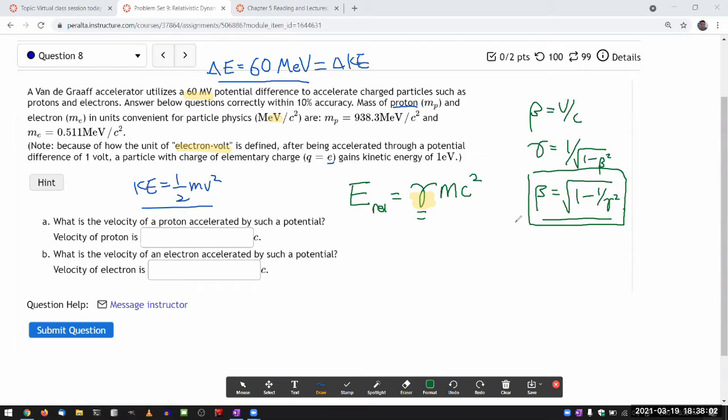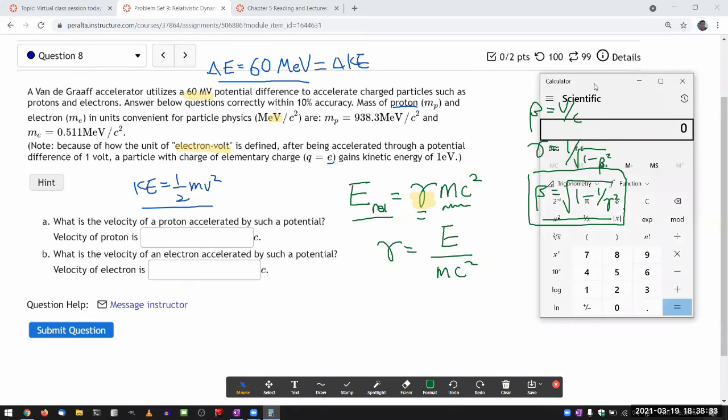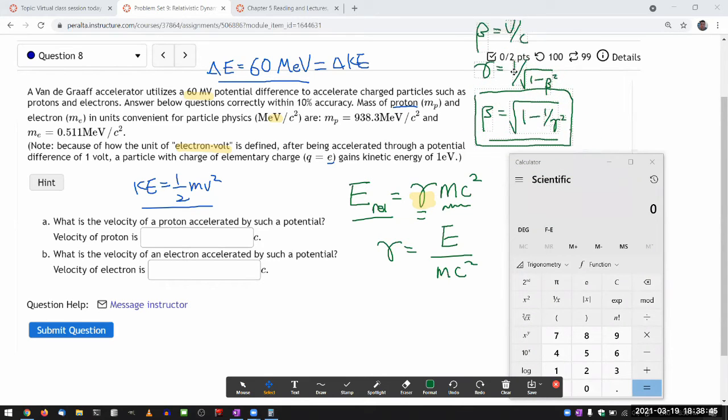So what I need is an expression for the total relativistic energy of each of the particles after having gone through this potential difference, and then I'm going to divide out the mC squared. So gamma is equal to the total relativistic energy divided by mC squared. So for proton, I think I can do the rest in the calculator without actually writing down any more expressions. That's how simple this algebra is. Let me just move this up so that I can put my calculator somewhere reasonable.